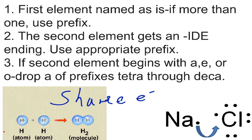We have some brief rules here. The best way to do this is with an example. Our first rule is the first element is as-is if it's only one of them. We don't use a prefix, but if it's more than one, we will use the prefix.